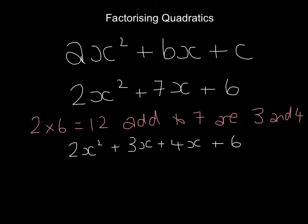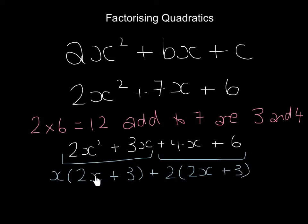The trick is that we factorize each pair separately. If I factorize this first pair, the only common factor I can take out is an x, giving x(2x + 3). For the second pair, I can take out a factor of 2, giving 2(2x + 3). If we've done this correctly, you should always spot that these two brackets are the same.